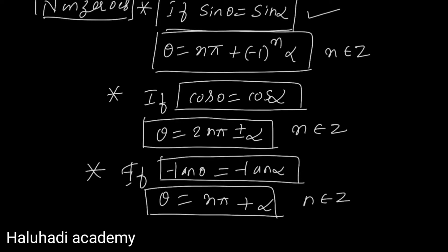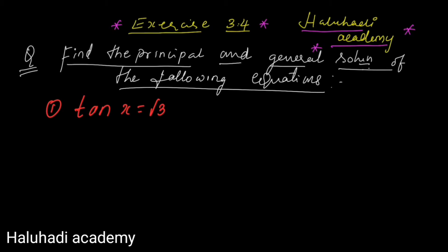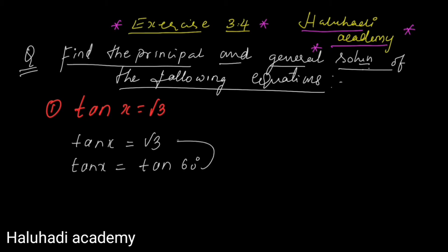Now let's move to the exercise problems. Exercise 3.4 — find the principal and general solutions of the following. The very first problem: tan x equals √3. Since tan 60° equals √3, we can write tan x equals tan 60°, which is tan(π/3) in radians — because 60° multiplied by π/180 gives π/3.